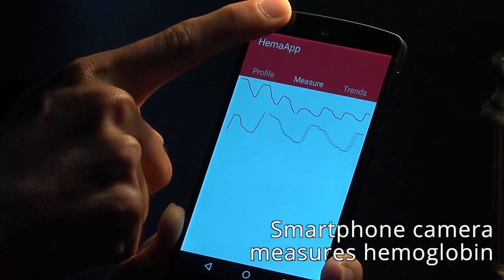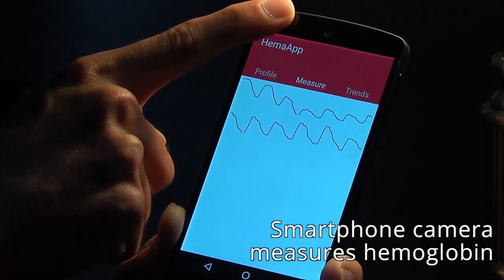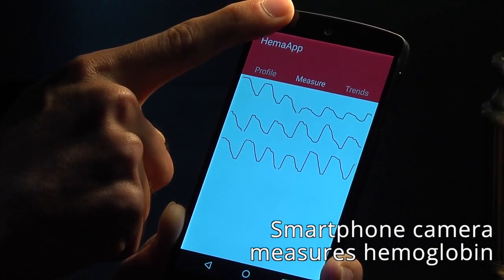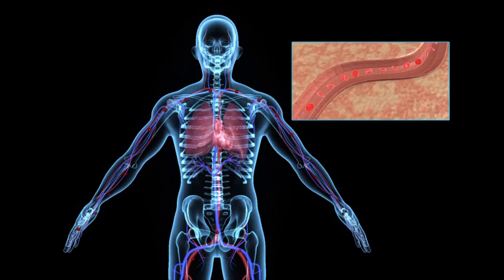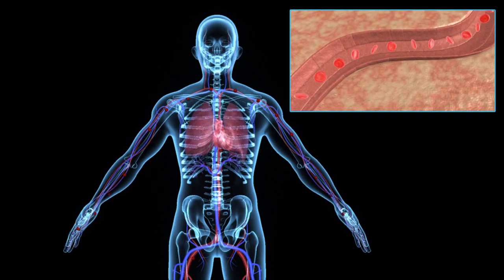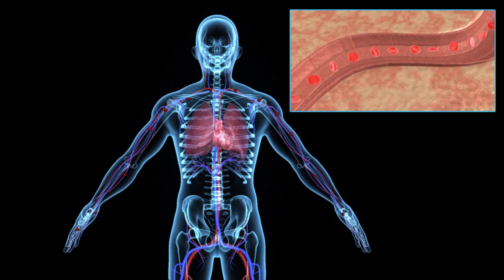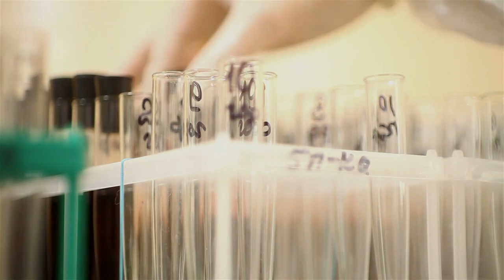HemaApp is a novel application that uses a smartphone camera to measure hemoglobin concentration in your blood. Hemoglobin, which is what gives blood its reddish color, is responsible for carrying oxygen around the body. If you have too little hemoglobin, your body can't deliver oxygen efficiently.